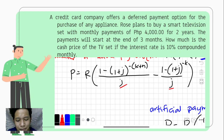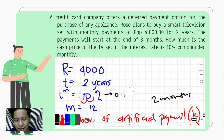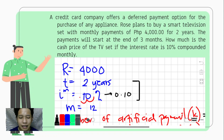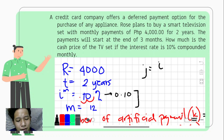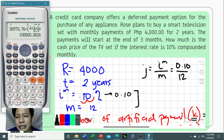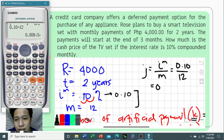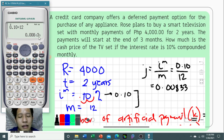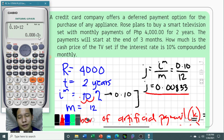We still need to find J. Checking the given, we don't have J yet. To find J, we use: J equals i raised to m over m, which is 0.10 divided by 12. Using our calculator, that gives 0.00833 — repeating and non-terminating. So our value of J is 0.00833 (repeating).